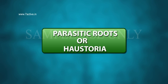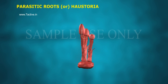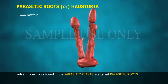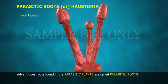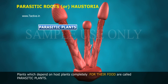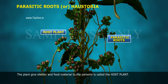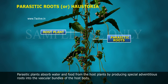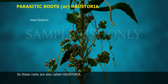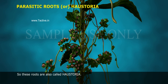Parasitic roots are called Haustoria. Adventitious roots found in parasitic plants are called parasitic roots. Plants which depend on host plants completely for their food are called complete parasites. The plant that gives shelter and food material to the parasite is called the host plant. Parasitic plants absorb water and food from the host by producing special roots into the vascular bundles of the host body. These roots are also called Haustoria.